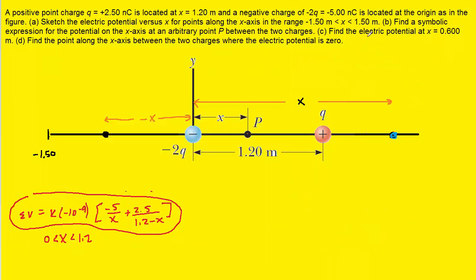We've already answered part B, which asks for a symbolic expression for the potential on the x-axis at an arbitrary point P. Notice that P is located from x equals 0 to x equals 1.2, which corresponds to the function outlined in red. So that red function is our symbolic expression.